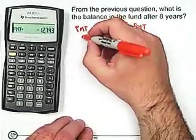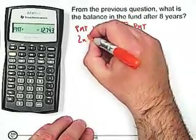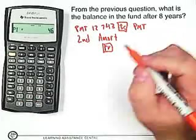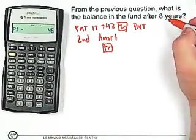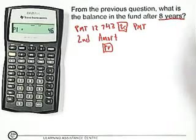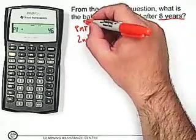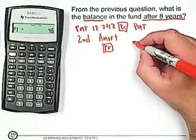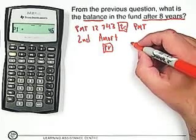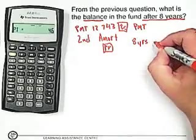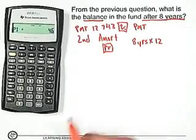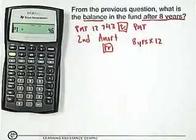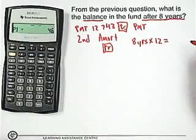Now let's go into the amortization function: 2nd AMORT, which is above the PV, so 2nd PV. What is the balance in the fund after 8 years? Since we just want the balance after 8 years, we want to find out how many payments we would make in 8 years. Take the 8 years and multiply times 12, because we had monthly payments and our PY was 12. You can do this right in the amortization screen: 8 times 12 equals 96.